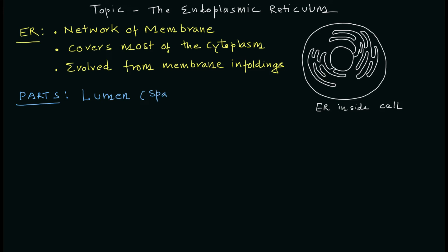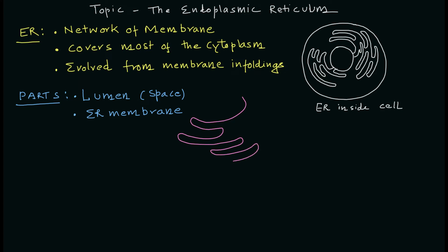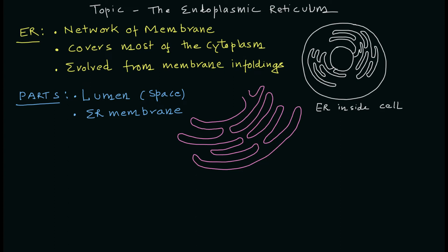There are two important parts: one is the lumen, which is the space inside the endoplasmic reticulum, and the second is the endoplasmic reticulum membrane. It is a membrane-bound organelle, so you have an empty space which is filled with solution — similar to the cytoplasm but quite different from it.